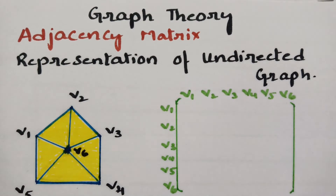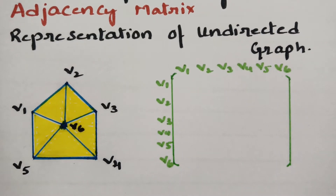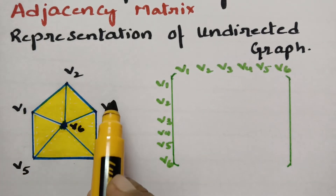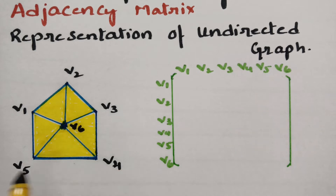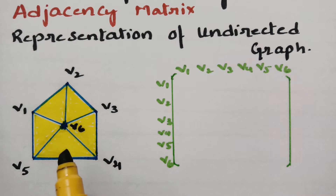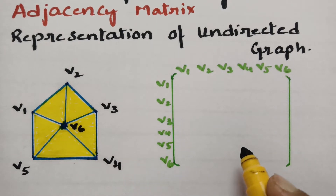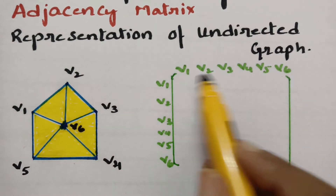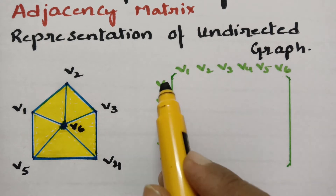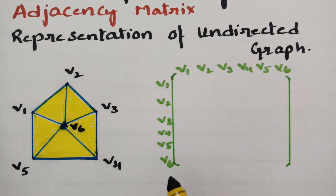Here the graph is shown. How many vertices are there? V1, V2, V3, V4, V5, and V6 — total six vertices. So we have to represent this undirected graph through a matrix. There are six vertices, so we have six rows and six columns.